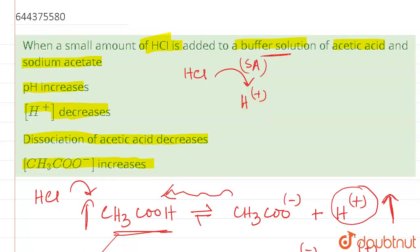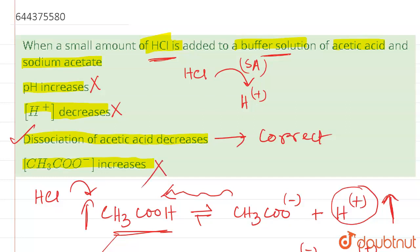Among the given options: option 1 — pH increases — no, that is not the role of a buffer solution; the pH should remain constant. Option 2 — concentration of H+ decreases — no, when we add HCl the concentration of H+ increases, and the excess is diminished by the backward shift. Option 3 — dissociation of acetic acid decreases — this is the correct answer. Option 4 — CH3CO- increases — this is also not correct. Only the third option is correct.